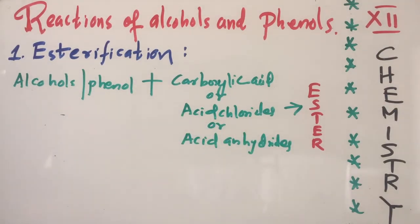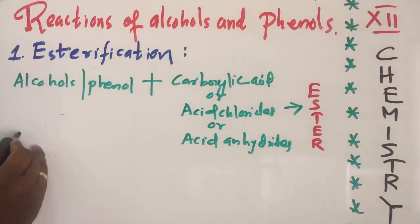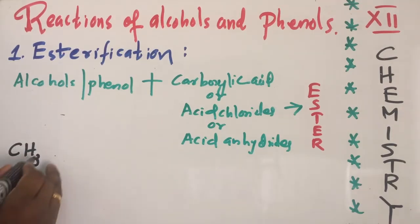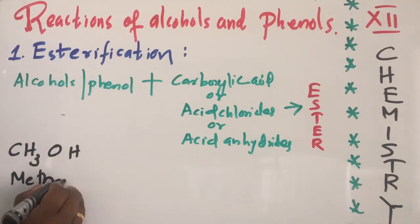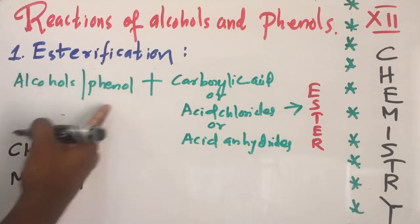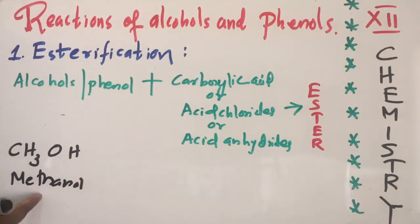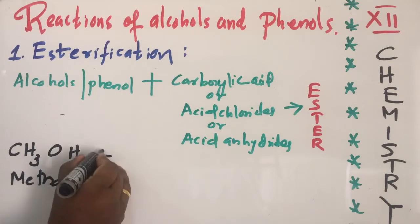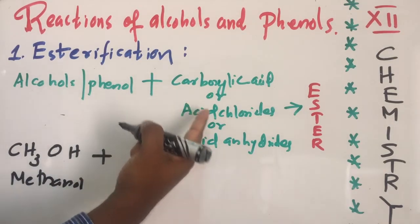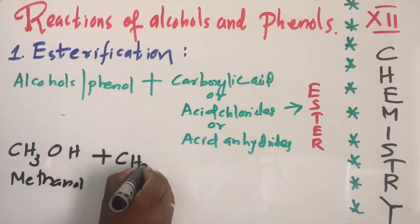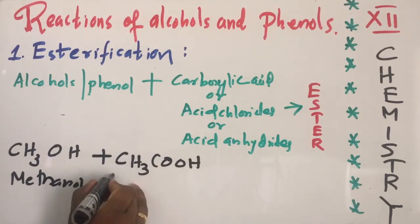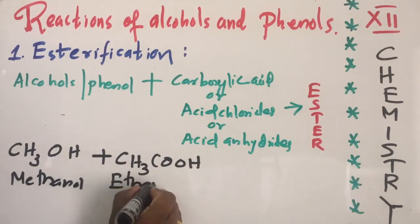Let's see some examples of esterification reaction. First, take an alcohol — CH3OH, methanol. Then take a carboxylic acid. We can first take carboxylic acid: CH3COOH. What is the name of this carboxylic acid? Ethanoic acid.